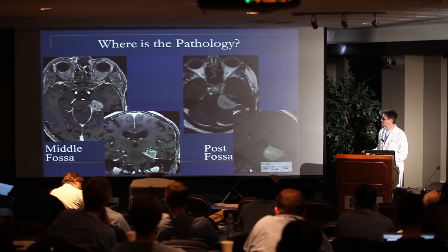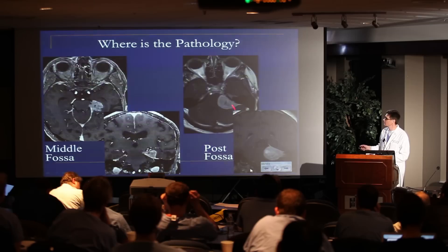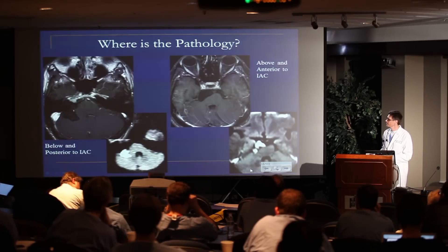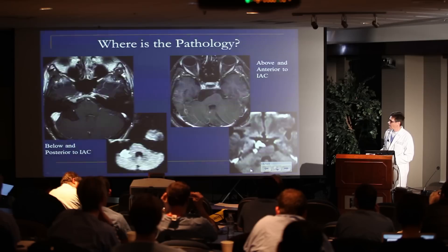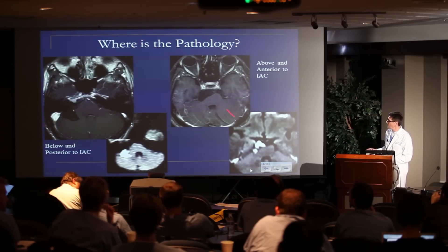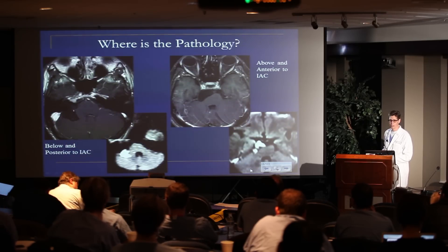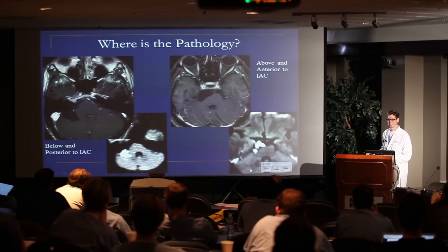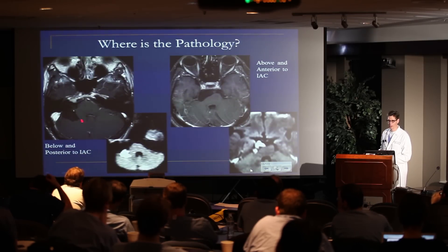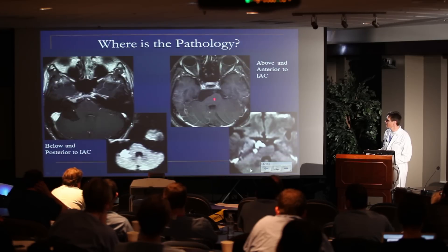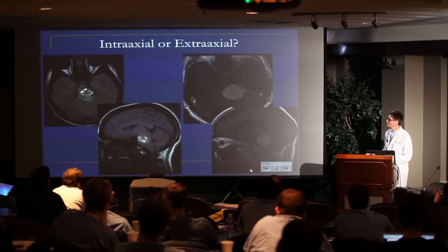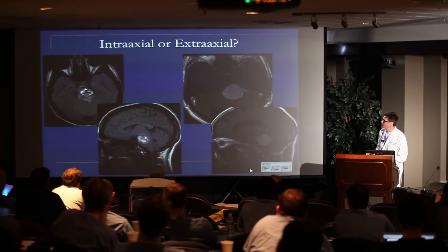For example, this is a tumor in the middle fossa — you don't really need to work in the posterior fossa to take it out. And likewise, you don't need to work in the middle fossa for this one. Where is it in relation to the IAC? This is an epidermoid. This one would be easy through a retro-sigmoid — it's posterior to the IAC. This one is high and ventral to the IAC, so for me this would be a good case for a posterior petrosectomy.